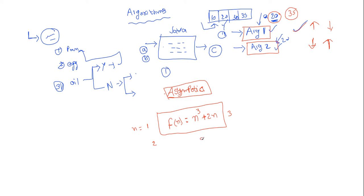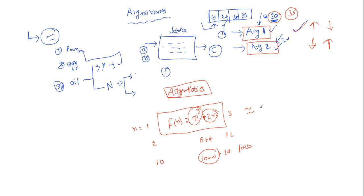For f(n) = n³ + 2n: when n = 1, the value is 1 + 2 = 3. When n = 2, the value is 8 + 4 = 12. When n = 10, the value is 1000 + 20 = 1020. For larger values of n, n³ is very large compared to 2n. So asymptotic analysis says f(n) is nearly equal to n³ — they ignore the 2n term. The near-equivalent value is 1000.